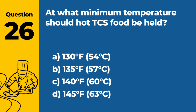Question 44: How can time temperature abuse occur during food delivery? Answer: A. By delivering food in non-insulated containers. Time temperature abuse during food delivery can occur if the food is not kept in insulated containers, allowing it to enter the temperature danger zone where pathogens can grow.